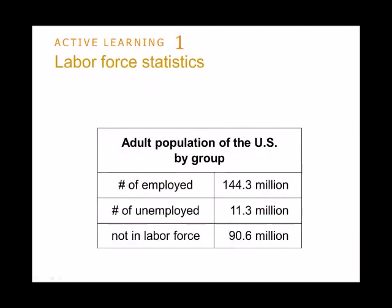Let's look at an example. The number of employed people in the US is 144.3 million. The number of unemployed is 11.3 million. And the rest — people not in the labor force — is 90.6 million. Not in the labor force includes full-time students who are not working, people above the age of 65 who are retired, stay-at-home moms, and stay-at-home dads. All those people are not considered part of the labor force.